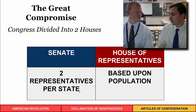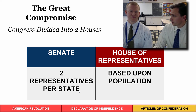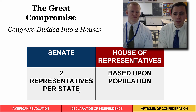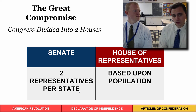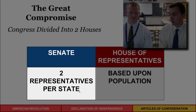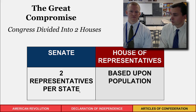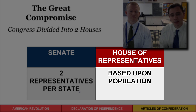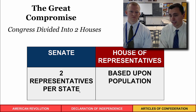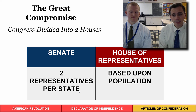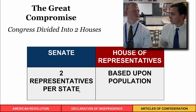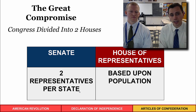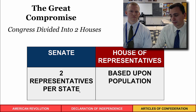Roger Sherman came up with the Great Compromise — also called the Connecticut Compromise — splitting Congress into two houses. The Senate, like the New Jersey Plan, gives two representatives per state based on equality. The House of Representatives is based on population, so bigger states have more representatives — Rhode Island has two today, while California has around 35. This settled the contentious issue of representation, though it wasn't perfect for every situation.